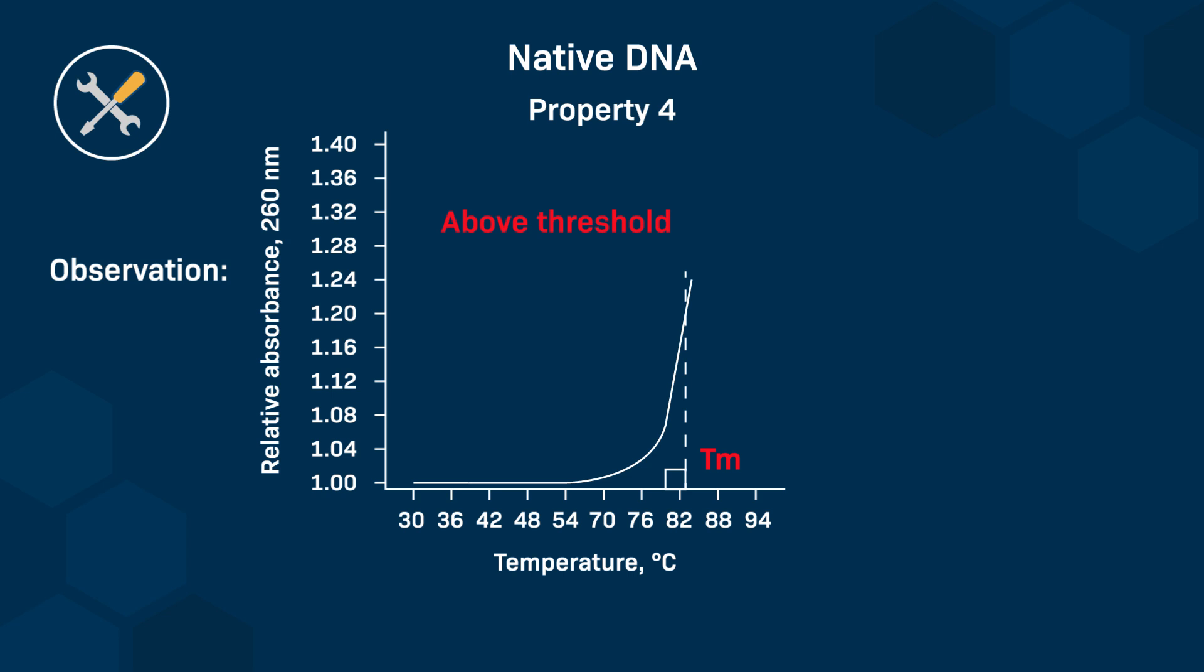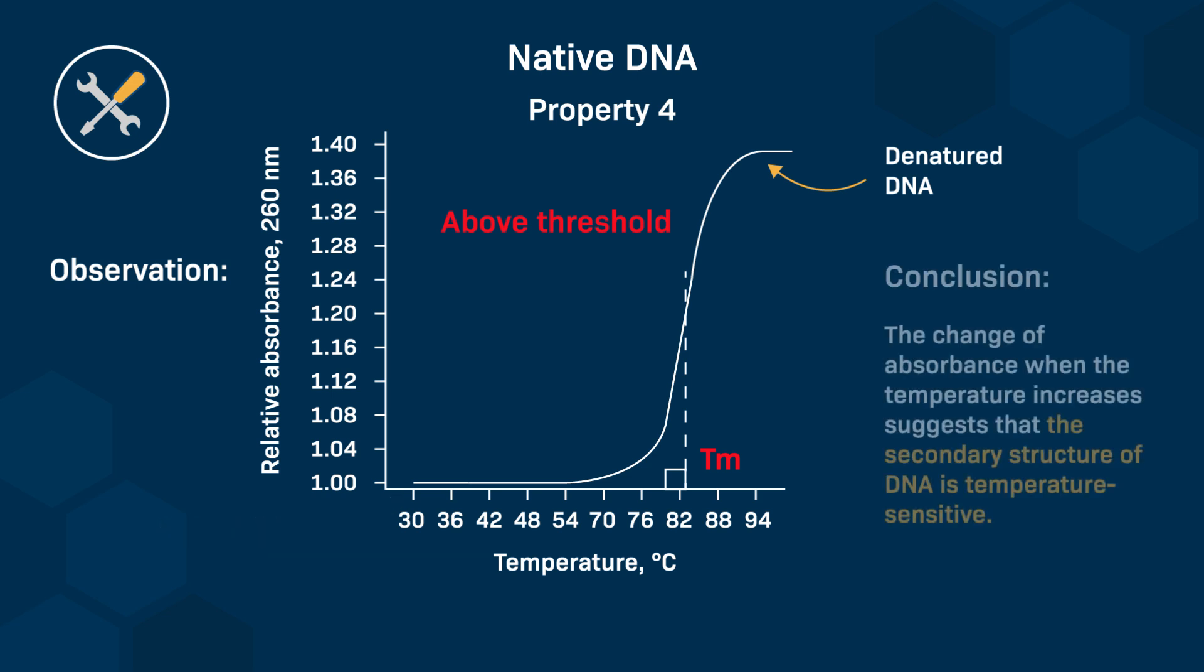The TM is the temperature at which 50 percent of the DNA is still in its native conformation. This process is called DNA denaturation. Finally, the absorbance reaches a plateau that is equivalent to the theoretical value calculated based on the composition of the DNA. The DNA is denatured due to the increase in temperature. The molecular weight of the denatured DNA is approximately half that of the native DNA molecular weight. The change of absorbance when the temperature increases suggests that the secondary structure of DNA is temperature sensitive. Renaturation of the DNA is possible by very slowly decreasing the temperature.